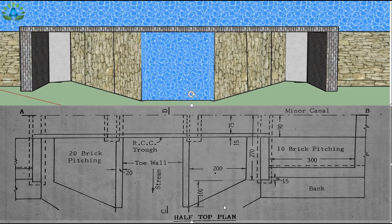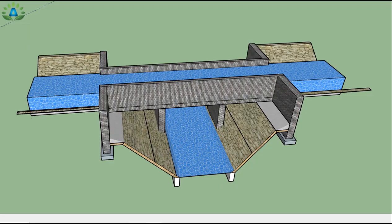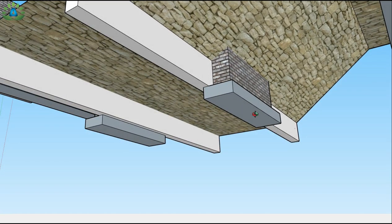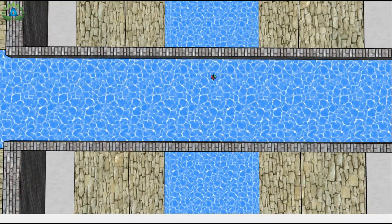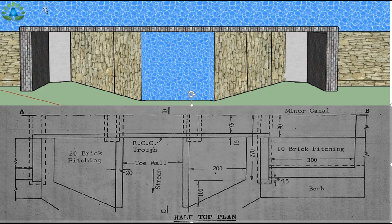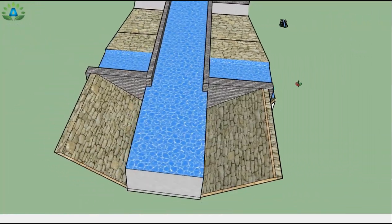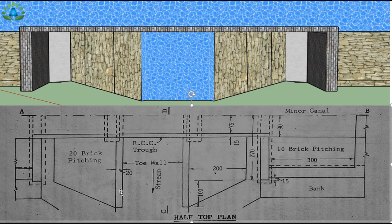Now we visualize the half top plan. We can see the wing wall portion on both sides, a sloped portion, and the stream. The pillars appear as hidden lines in the top view because they cannot be seen from above. We also have the canal at the top in the half portion, the RCC trough portion on both sides, and the two toe wall portions.